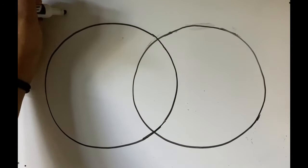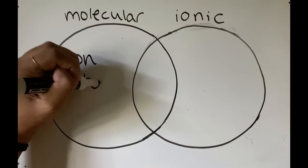Okay, so what's the difference between molecular and ionic compounds? Molecular compounds are usually made up of nonmetals, and ionic compounds are usually made up of one metal and one nonmetal.